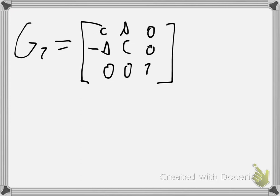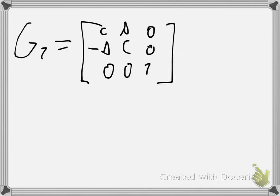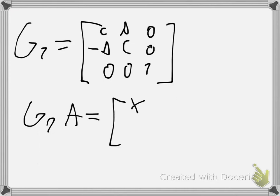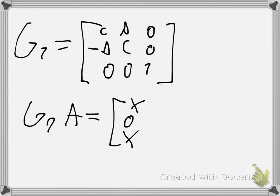You calculate your cosine and sine, put them in your matrix, and then apply your matrix to A. You should then get some other matrix with a 0 in the place of the element you wanted to eliminate.